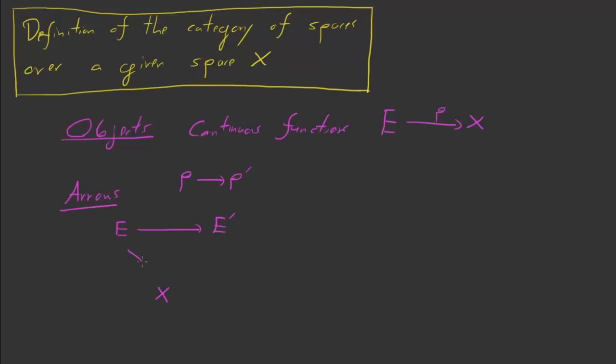which would look like this. This is p, and this is p prime. An arrow would be some map alpha, say, making this diagram commute. So arrows are maps alpha making the diagram commute.